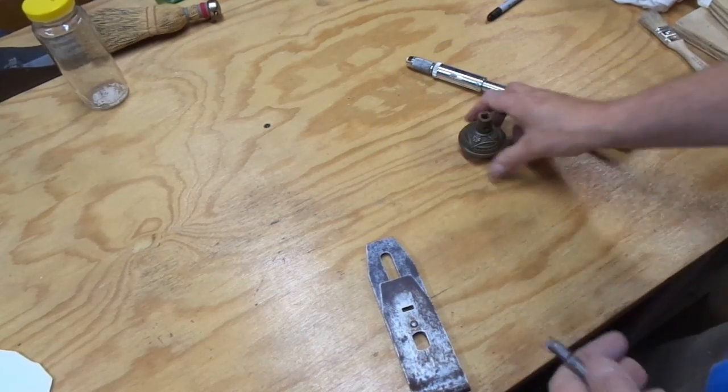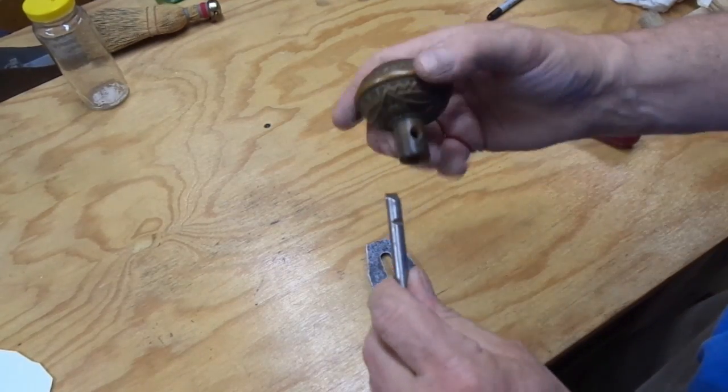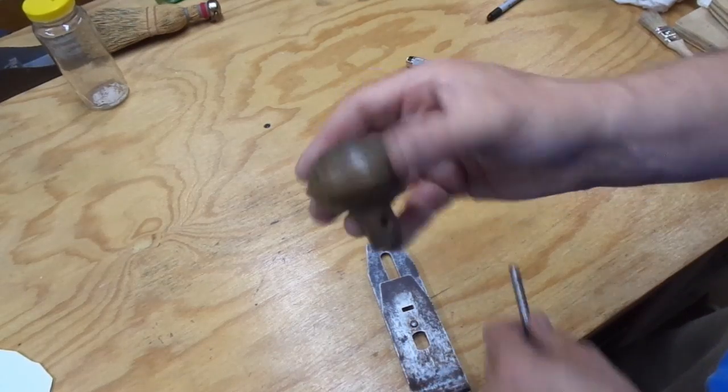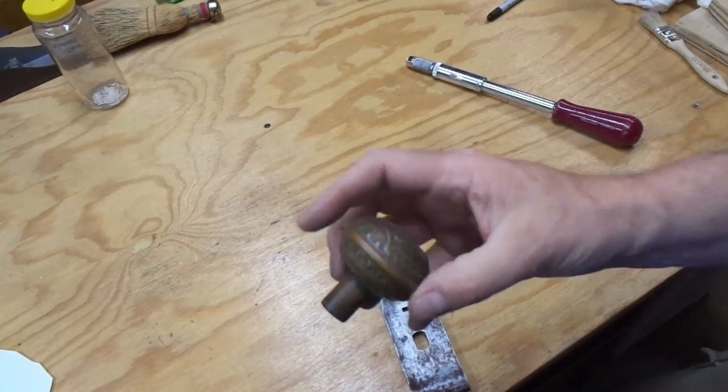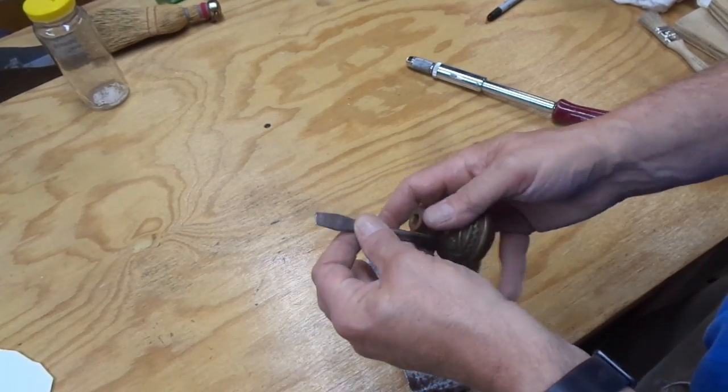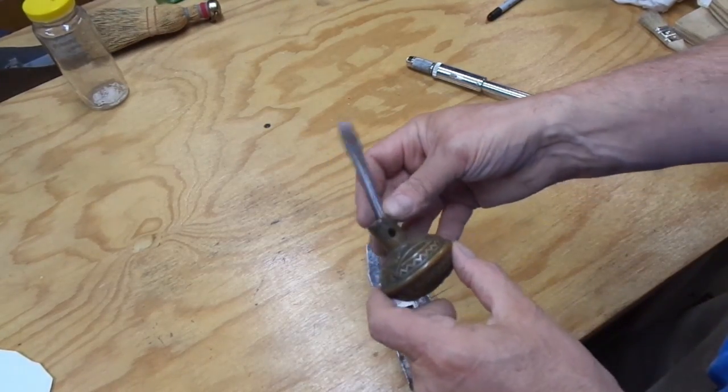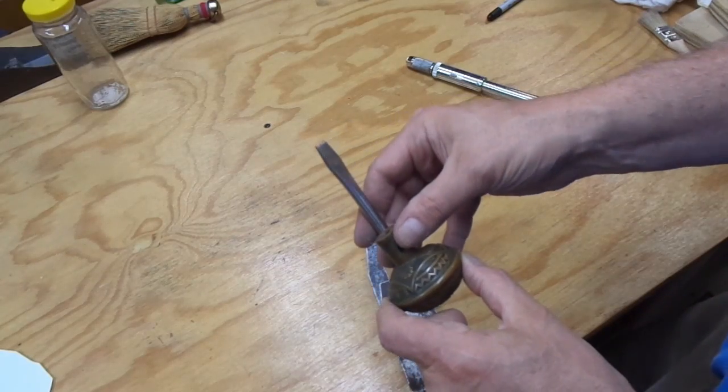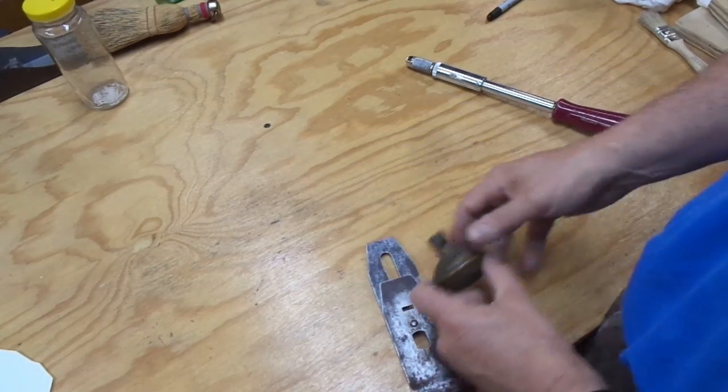And I'm thinking if I could mount this screwdriver onto this doorknob - this is a solid brass Victorian doorknob - and I'm thinking if I could mount those together somehow, I'd have a pretty swanky screwdriver for taking apart hand planes.